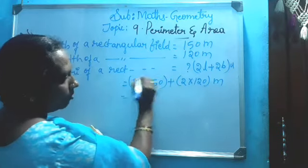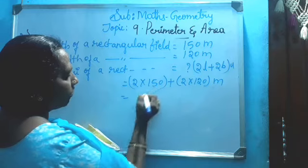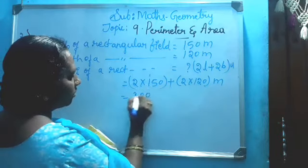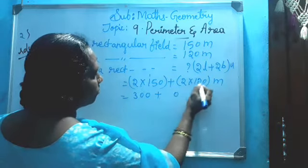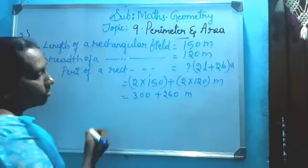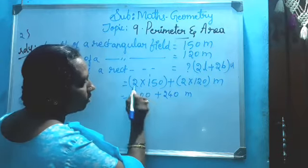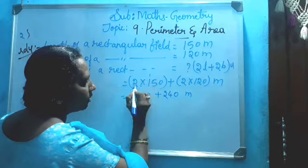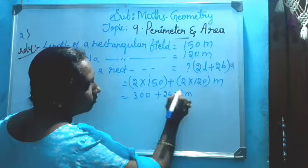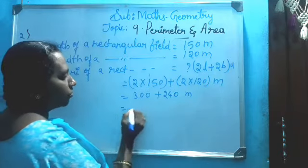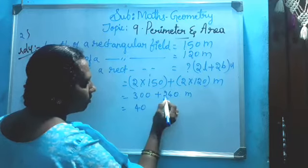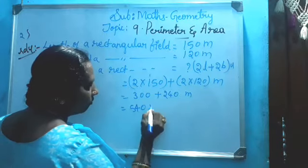This is the calculation. Two zeros are 0, two fives are 10, carry 1, two ones are 2 plus 1 equals 3. Again, two zeros are 0, two twos are 4, two ones are 2. Once again: two zeros are 0, two fives are 10, carry 1, two ones are 2 plus 1 equals 3. Two zeros are 0, two twos are 4, two ones are 2.